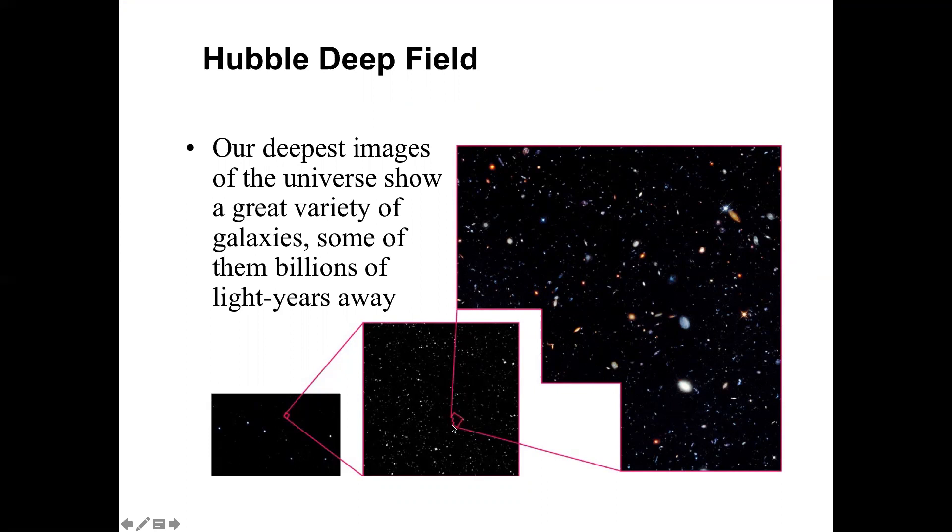And yet, when you take the Hubble Space Telescope and observe for a full day in several different colors, this is the image that you get. It was, at the time, the deepest image of the universe that had ever been taken. Almost every single thing in this region is a galaxy.